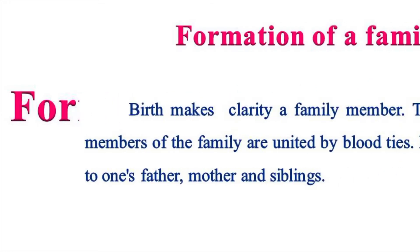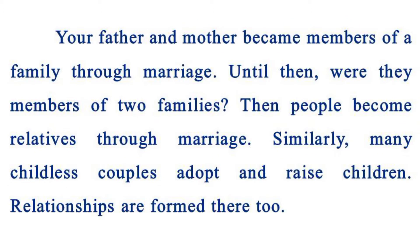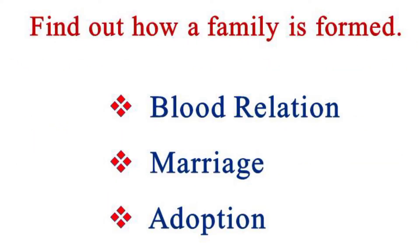Formation of a family: Birth makes a person a family member. Some members of the family are united by blood ties — blood ties to one's father, mother and siblings. Your father and mother became members of a family through marriage; until then, they were members of two different families. People also become relatives through marriage. Similarly, many childless couples adopt and raise children, and relationships are formed there too. So a family is formed through blood relation, marriage, or adoption.